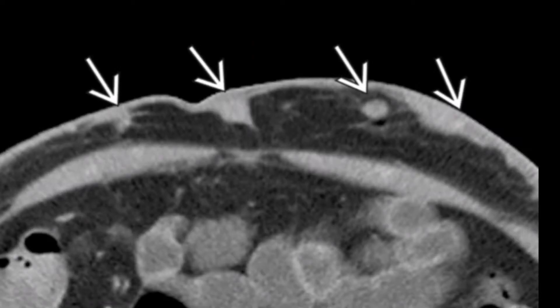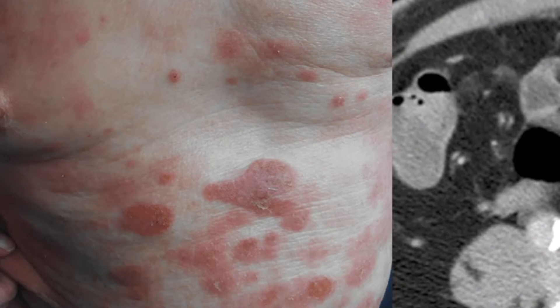Axial contrast-enhanced CT shows irregular subcutaneous nodules and skin thickening along the anterior abdominal wall. These findings were clinically apparent as purple plaques and ulcerated masses.